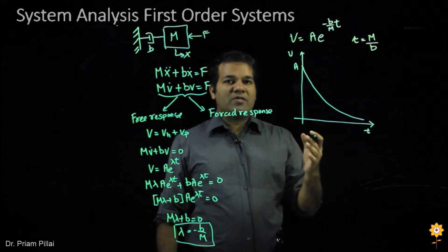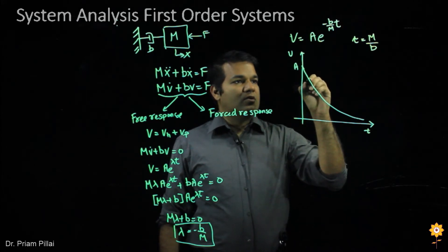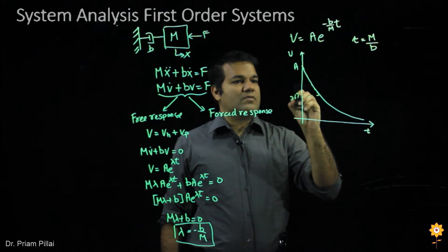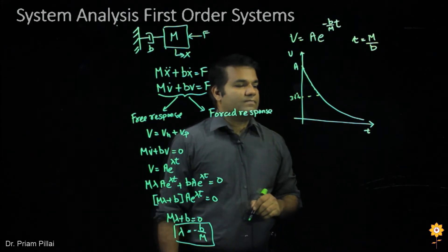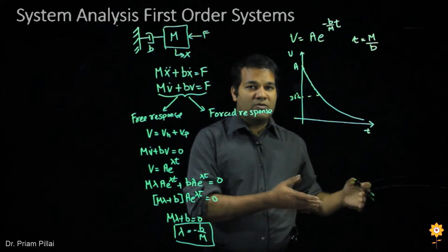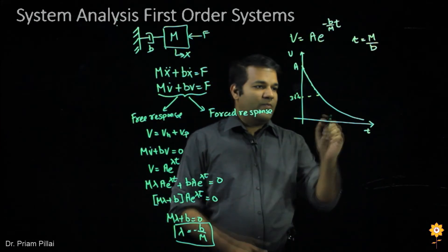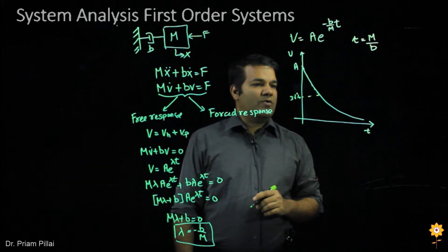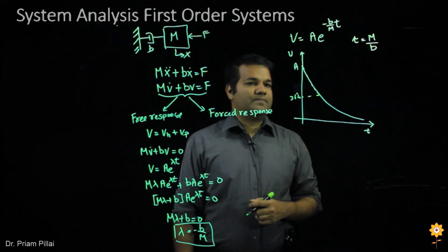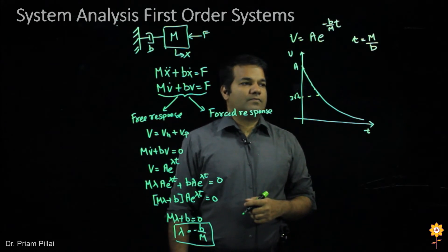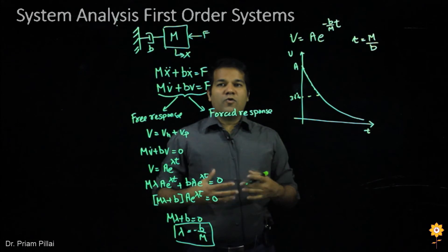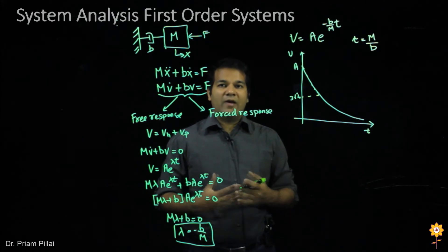Let's try to graph this equation. The curve would start at the point a, which would be the initial velocity, and then decay down to 0 as time goes to infinity. In one time constant tau or m by b, this curve would reach around 36% of its final value. And by three time constants, it will reach to 5% of the final value.